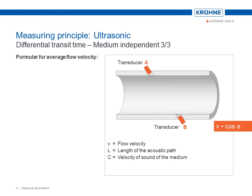Assuming, then, that neither temperature, pressure, nor composition of the medium change in such a short time, the resulting flow rate of the medium can be shown as follows. The length of the acoustic path divided by 2 times the cosine of alpha multiplied by the result of dividing the difference between the two transit times by the product of the two transit times.